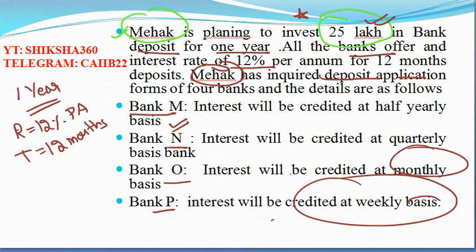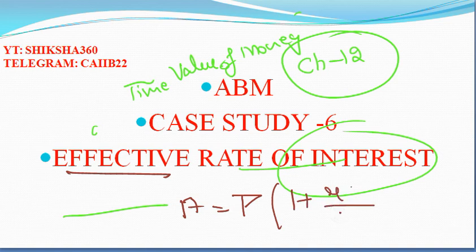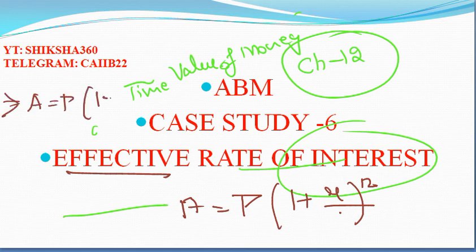Here we are going to calculate the effective rate of interest. The effective rate of interest formula is: A is equal to P times (1 plus r/n) raised to the power n, where the value of n depends on whether compounding is half-yearly, quarterly, monthly, or weekly. For more information and any query, you can check session number 2.